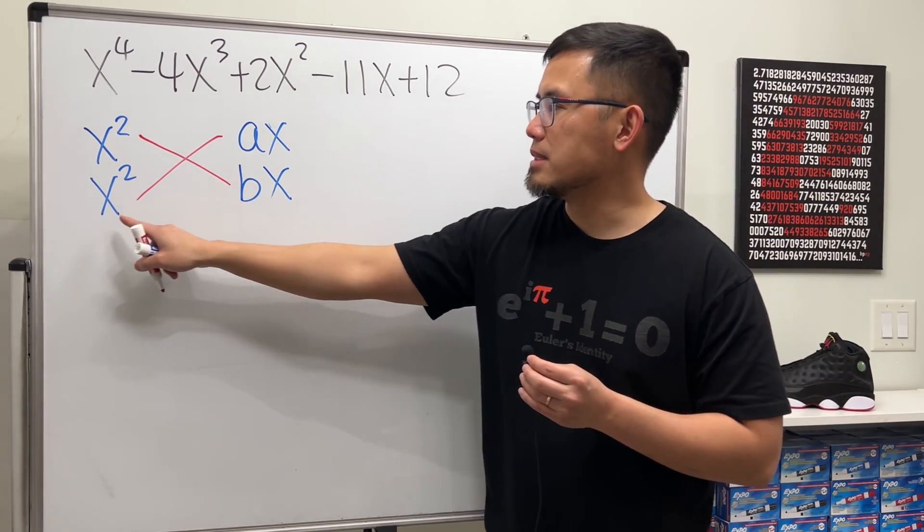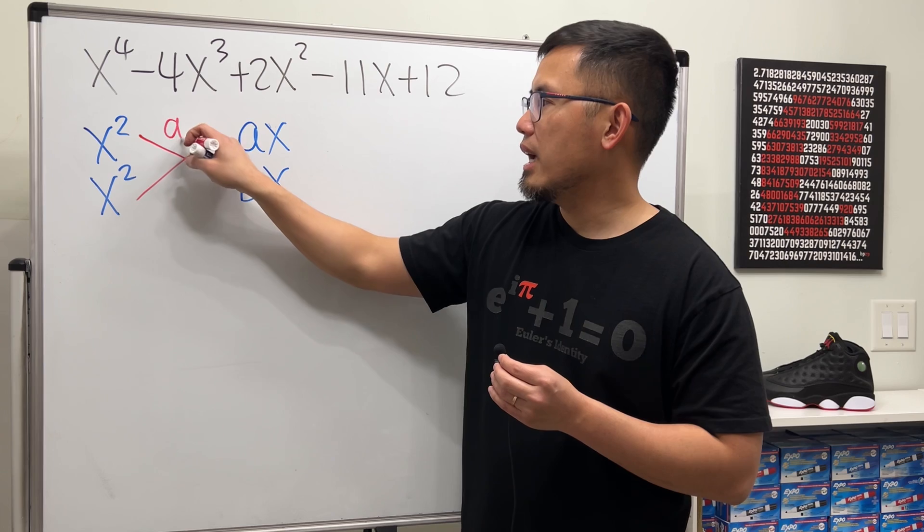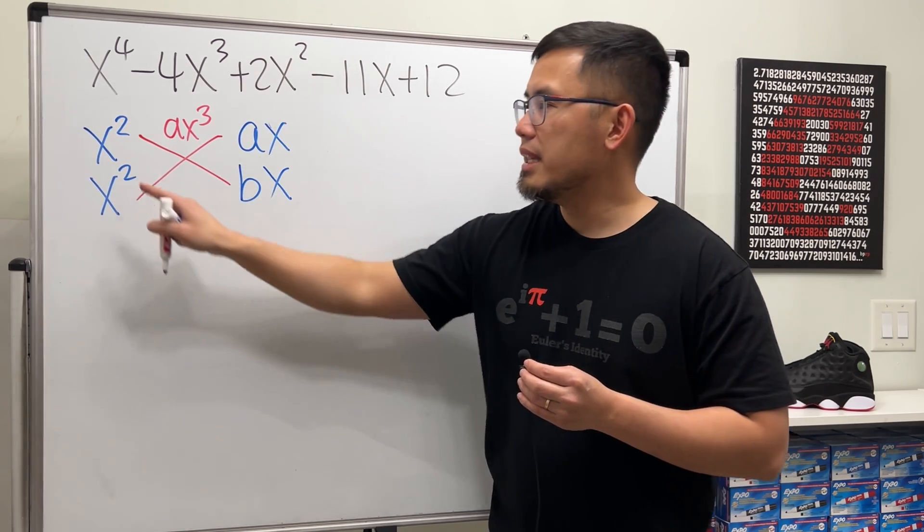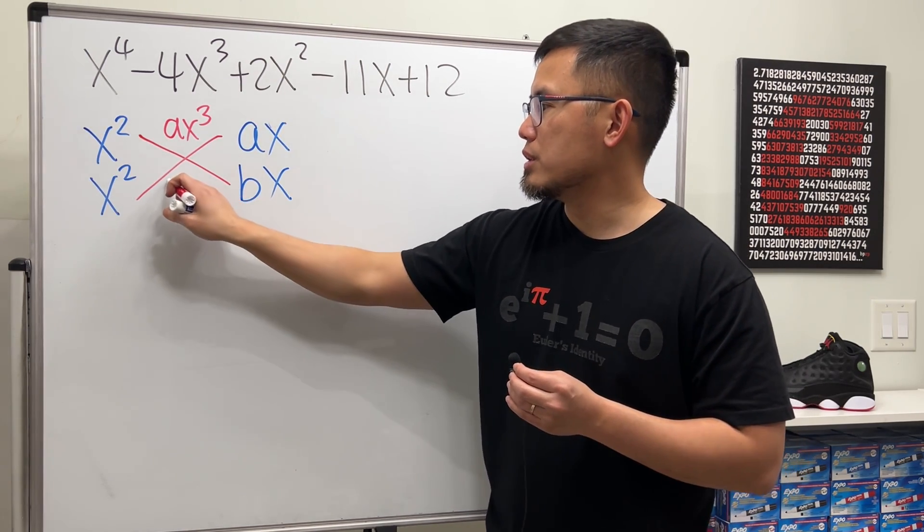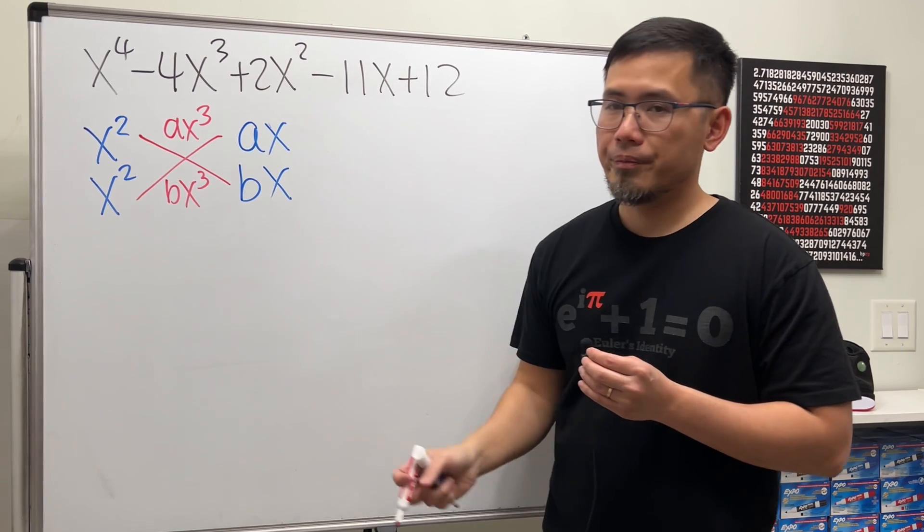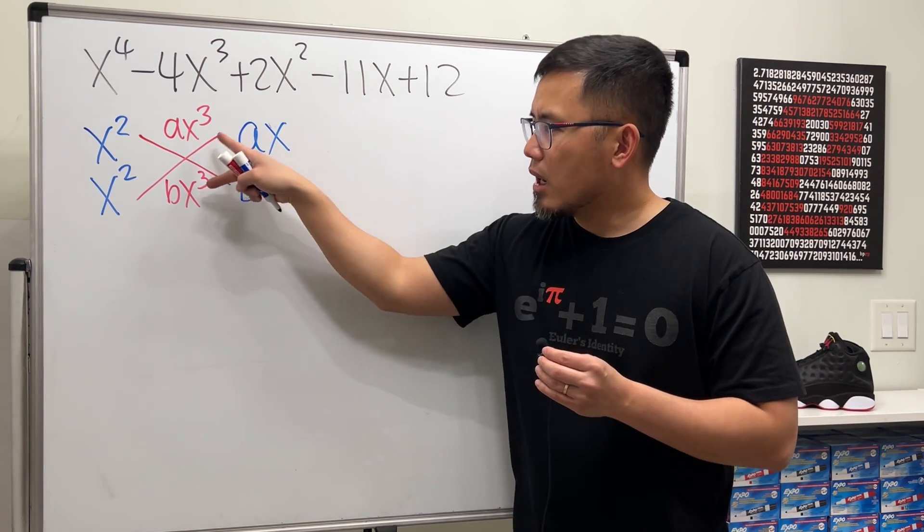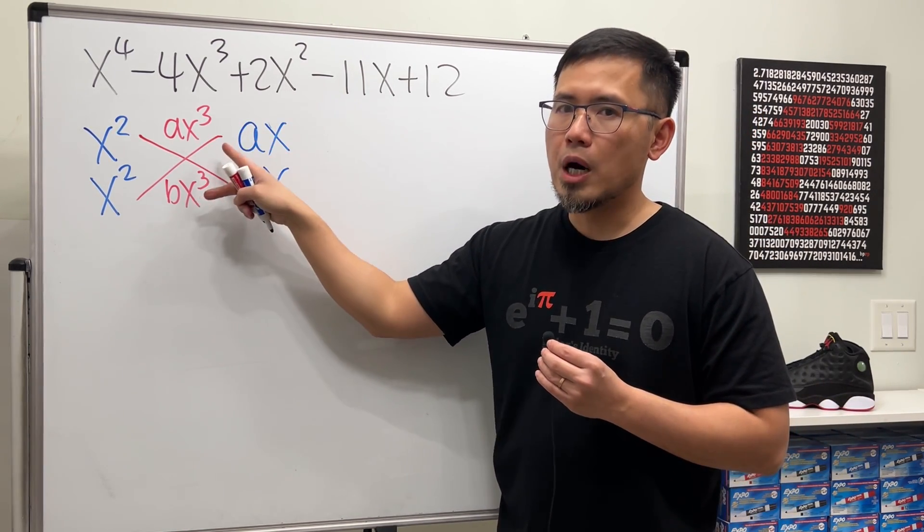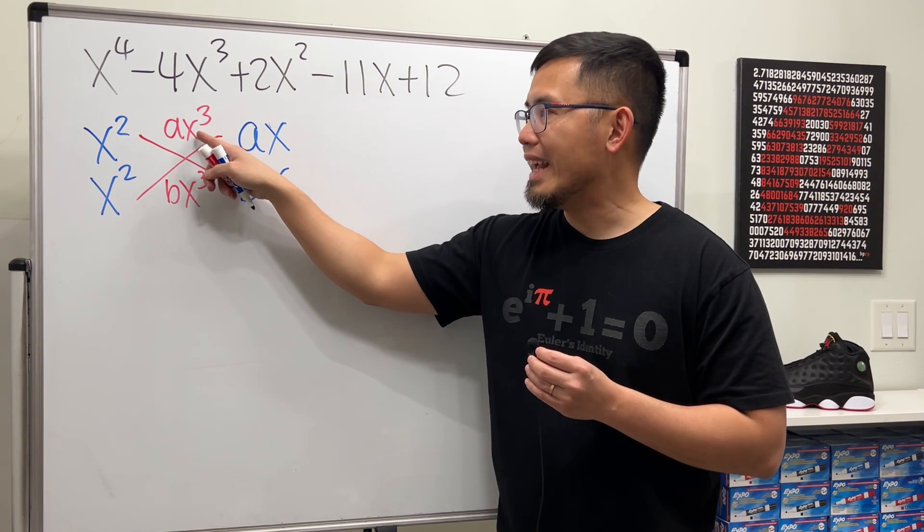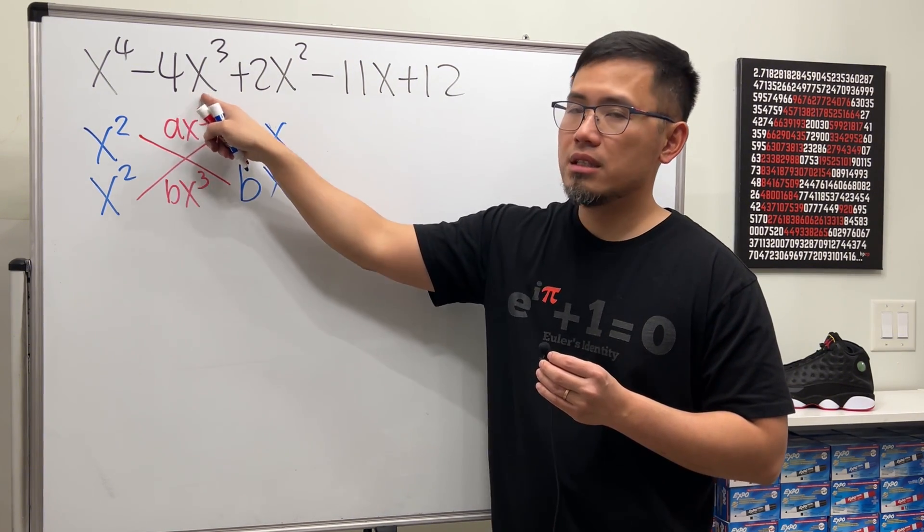So let's take ax times x squared. That will give us ax to the third power. And then, x squared times this, which is bx to the third power. In fact, these are the only two x to the third power terms. And when we add them, we must get this right here.